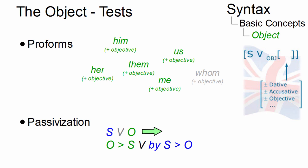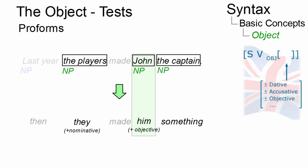Here are two tests that can clearly identify the object. According to the proform test, a noun phrase that can be replaced by a personal pronoun in the objective case must be the object. This applies to John. Its proform is the objective marked pronoun him.